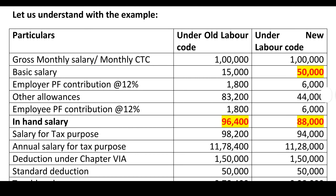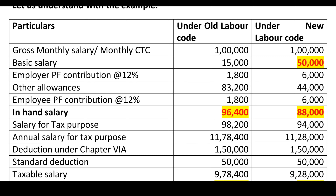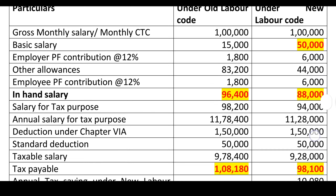Under the new labor code, the gross monthly CTC remains 1 lakh. However, the monthly basic salary must be at least 50% as per the new labor code, so minimum basic is 50,000. Employer PF contribution at 12% = 50,000 × 12% = 6,000. Employee PF contribution is also 6,000, calculated on basic salary only. Therefore, the employee's take-home salary comes to 88,000 — that is, 1 lakh minus 6,000 employer contribution and 6,000 employee contribution.